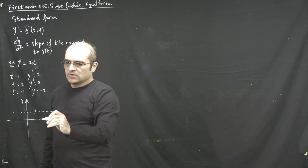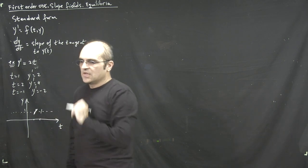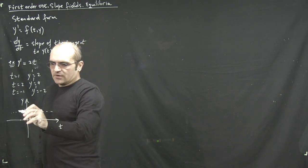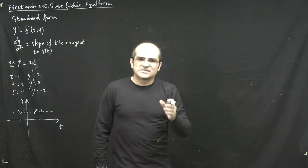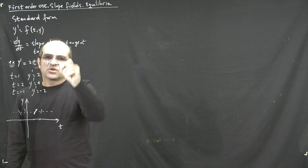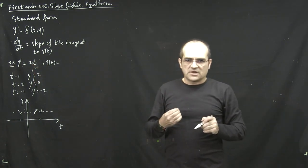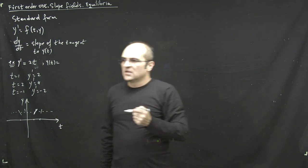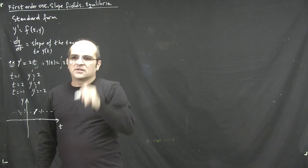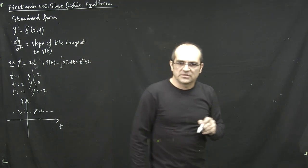If t equals 1, the slope is 2, so it's a positive, steep tangent. If t equals 2, it's going to be even steeper — a bigger positive slope. If t equals minus 1, that's a negative slope. This is not a surprise, because if the right-hand side doesn't depend on y, it's like telling you what the derivative is and you have to find the original function, which is just a direct integral. The integral of 2t is t squared, so the solution is t squared plus c.